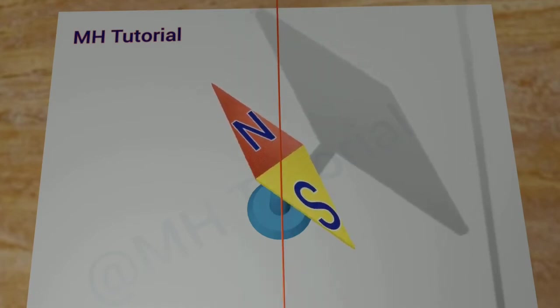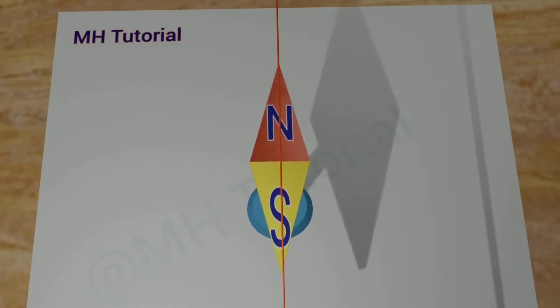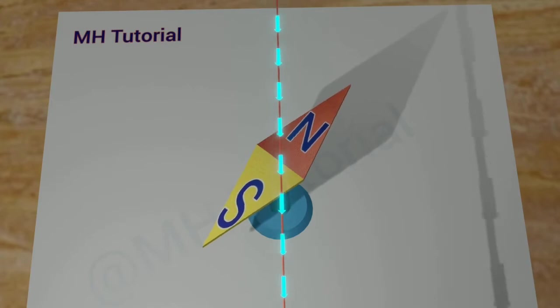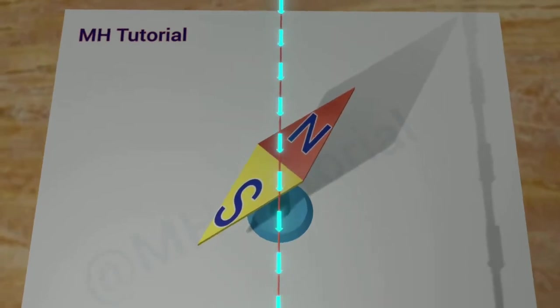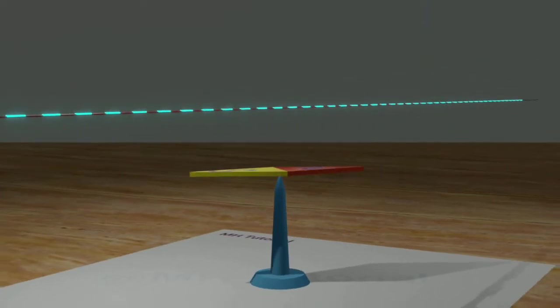If the direction of the electric current changed, the magnet appeared to get deflected towards the other side. After various tests and experiments, he summarized that a steady current carrying wire produces a steady magnetic field around it.